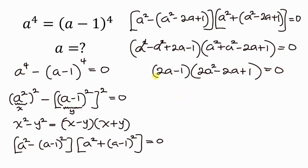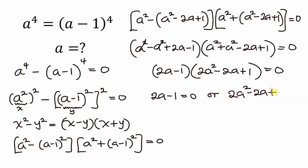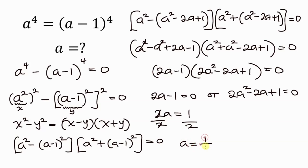So we have two cases: either 2a minus 1 is equal to 0, or 2a squared minus 2a plus 1 is equal to 0. Solving the first part, we move negative 1 to the right so that we have 2a equal to 1. Dividing both sides by 2, this gives a equal to 1 over 2. So we've got a value for a from our first case.